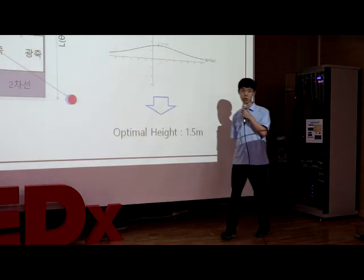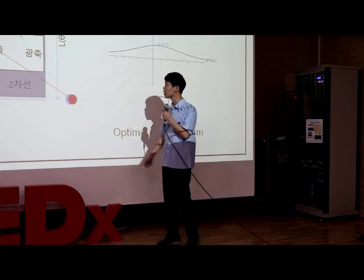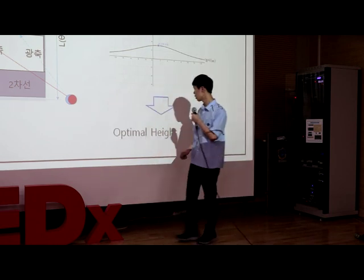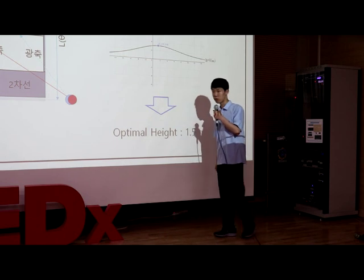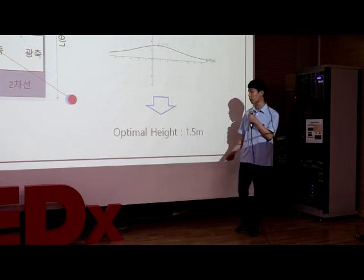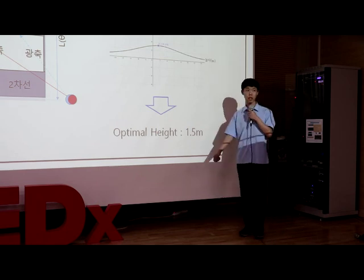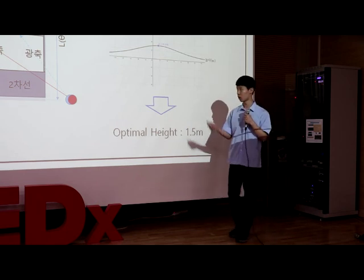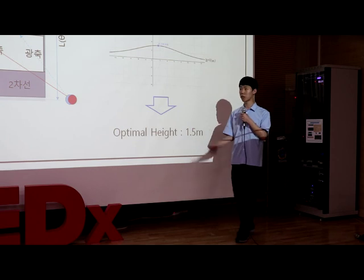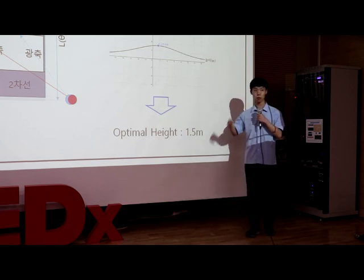So we suggest putting the light in front of the crosswalk and throwing light on the side of pedestrians. After examining and calculating many papers, we found out the optimal height which can maximize the vertical luminance of pedestrians and minimize the cost.